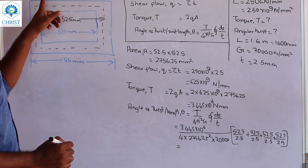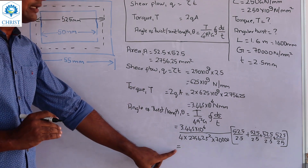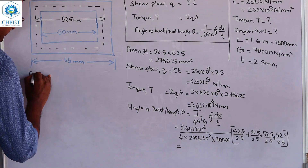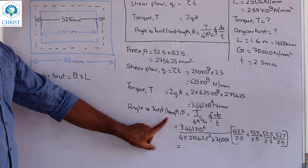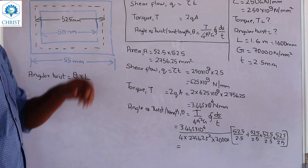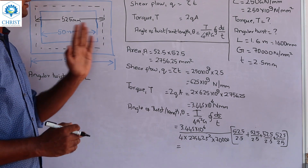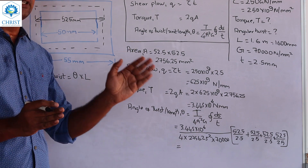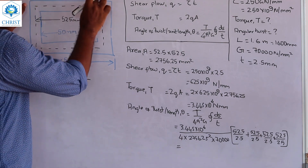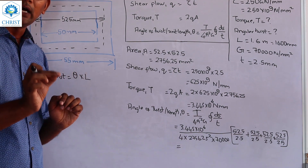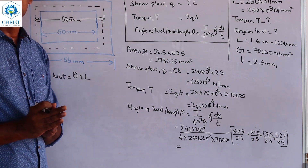With thickness 2.5mm and all values substituted, we obtain the angle of twist per unit length θ. The total angular twist equals θ times L, where L is the total length of 1.6m. This gives the total angular twist of the shaft. Note the key point: the area used is the center-to-center distance, not the inner-to-inner or outer-to-outer dimensions.